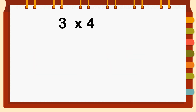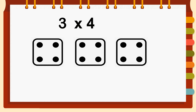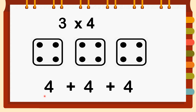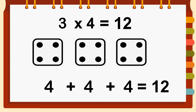Here we have another multiplication sentence: three times four. Just like we practiced previously, we use images to represent the numbers. Here we have three equal groups of four, and in each group we have four circles. Adding repeatedly: four plus four plus four equals twelve. And three times four equals twelve.